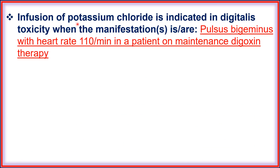Infusion of potassium chloride is indicated in digitalis toxicity when the manifestations are pulsus vagominous with heart rate 100 per minute in a patient on maintenance digoxin therapy. In this condition, potassium chloride supplementation is recommended.